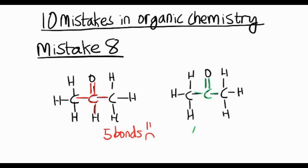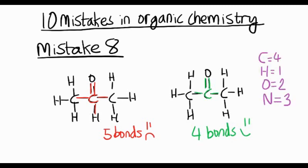So propanone should actually look like this. There's no hydrogens on the middle carbon. One, two, three, four bonds. And that's good. So try and remember the valency of different atoms. Carbon's 4, hydrogen 1, oxygen 2, nitrogen forms three bonds. And the halogens, chlorine, fluorine, bromine, they all form one bond. If you memorize that, that will help you check your structures.